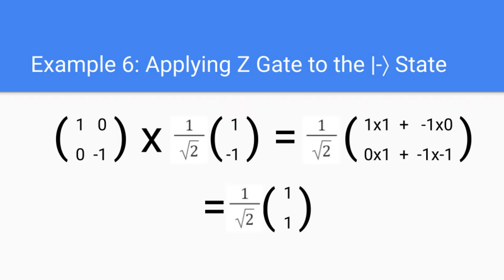For our final example, let's take a look at what happens when we apply the Z gate to the |−⟩ state. We have the Z gate on the left multiplied by the |−⟩ state on the right, which is 1 over root 2 as a scalar times the matrix of 1 on top and negative 1 on the bottom. When we multiply these out, we get 1 over root 2 in front, times the matrix of 1 times 1 plus negative 1 times 0 on top, and 0 times 1 plus negative 1 times negative 1 on the bottom. Adding these values up, we get 1 over root 2 times the matrix of 1 on top and 1 on the bottom, which is the |+⟩ state. So when we apply the Z gate to the |−⟩ state, we get back the |+⟩ state.